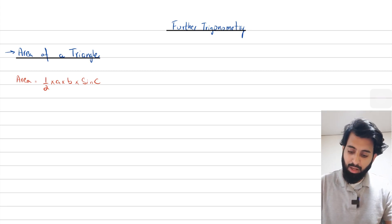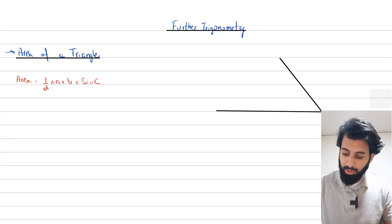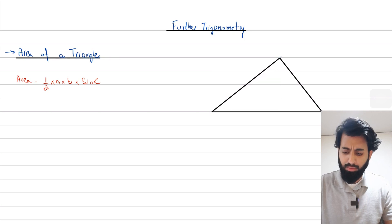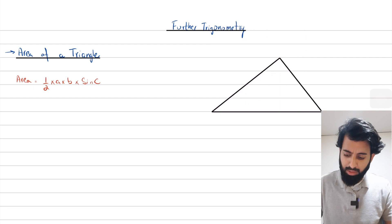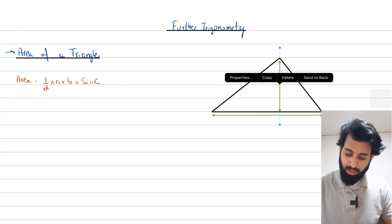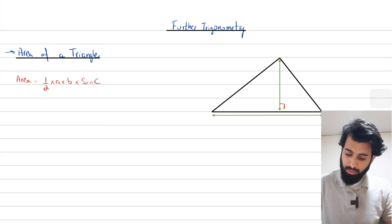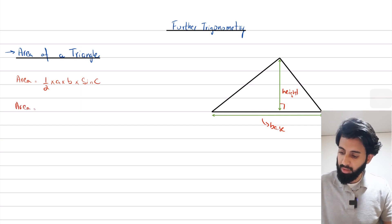We're going to learn how this formula is used and exactly when we apply it. One formula for calculating the area of a triangle is something we're all familiar with — we've been using it since day one. That formula is half times base times height, where the base and height are perpendicular to one another.